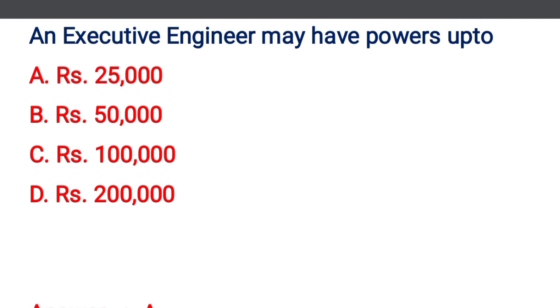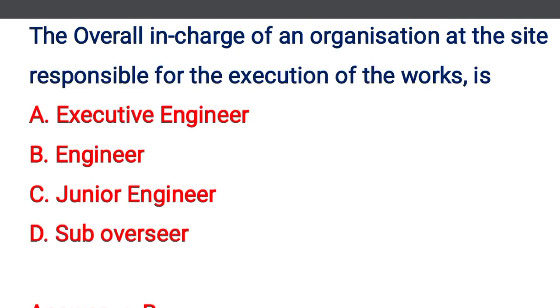Next question: the executive engineer may have powers up to — option A: 25,000, option B: 50,000, option C: 1 lakh, option D: 2 lakhs. The correct answer is option A: 25,000.